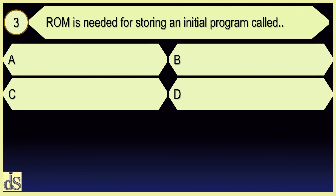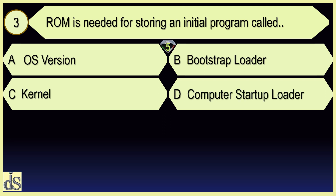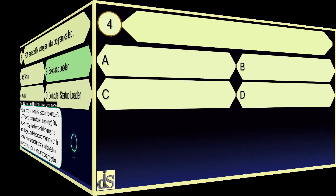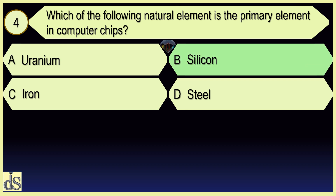The ROM is needed for storing an initial program called the Bootstrap Loader. Which of the following natural element is the primary element in computer chips? Silicon.